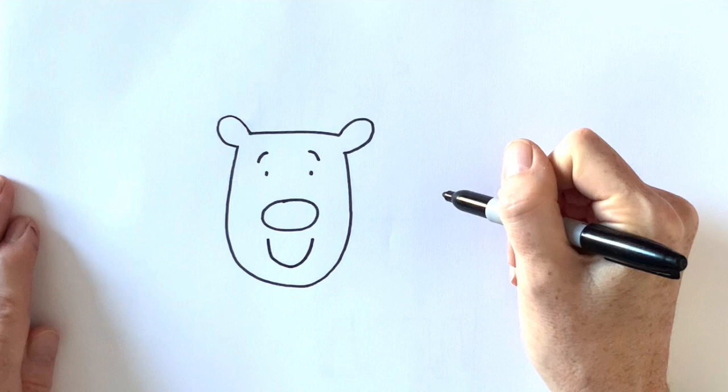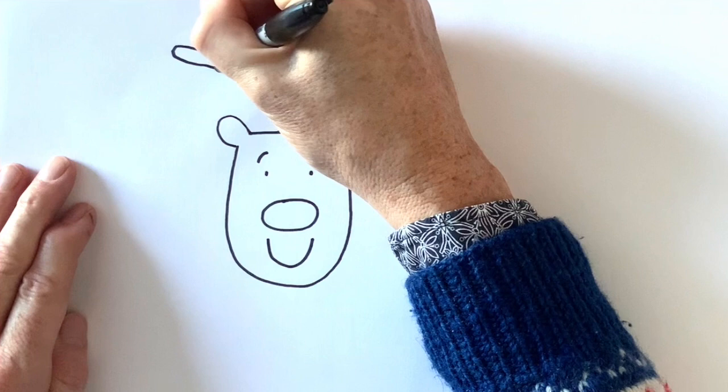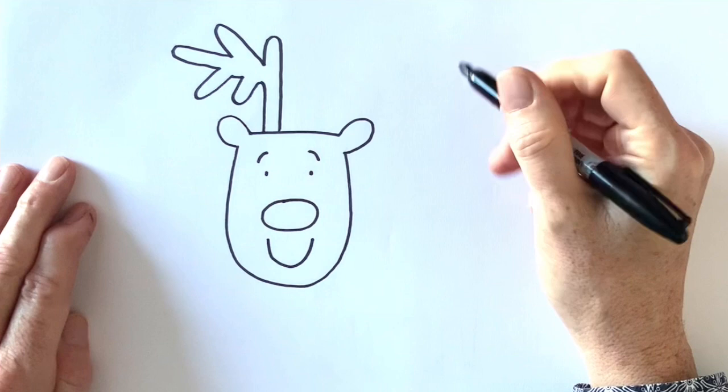What's the next thing we need to draw on our reindeer? We need to give it some antlers, don't we? So antlers are a bit like the branches on a tree, aren't they? So I'm going to try and draw one antler on this side with lots of little branches on it like that.